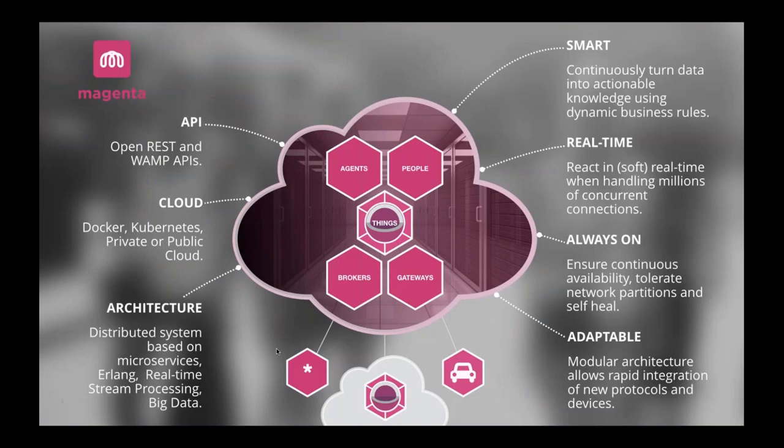In summary, Magenta is an IoT platform that combines people and things, allowing you to connect to things using different protocols — cloud-to-cloud or directly with those things. We developed an open REST API and a WAMP API. It's a cloud platform implemented mostly using microservices, most of which are written in Erlang, although we also have Node.js and Python microservices. Most are Dockerized and run within a Kubernetes cluster.